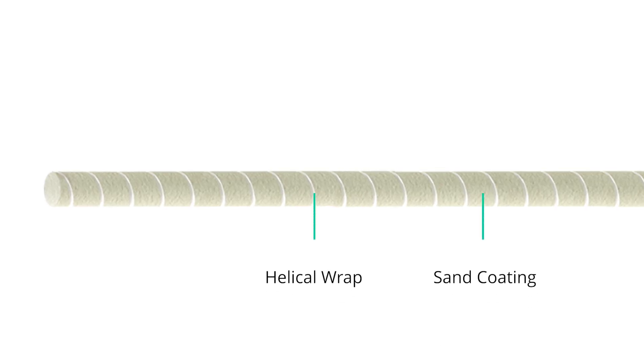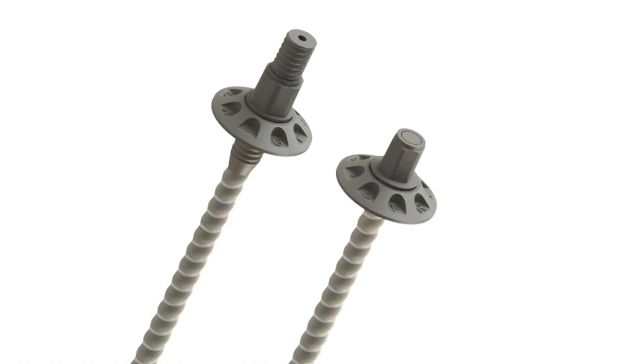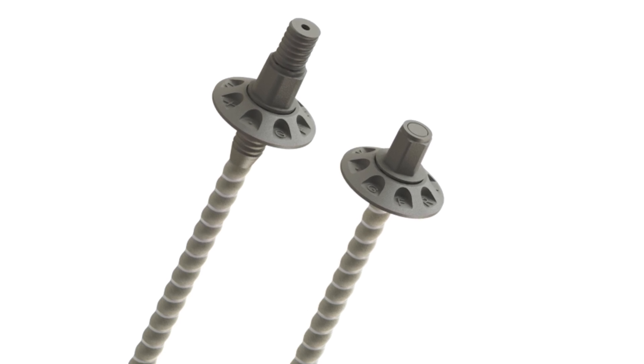GFRP bars have a very rough surface, achieved in two ways: on rebars, we use a helical wrap and sand on the surface. On anchors or geotechnical products, we produce fully threaded bars with a much deeper thread for more mechanical interlocking. In both cases, bond strength is characterized in labs and regularly tested in situ with pullout tests, for example in tunnel projects.